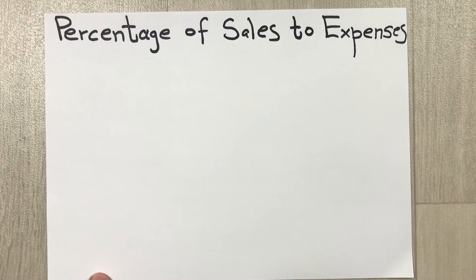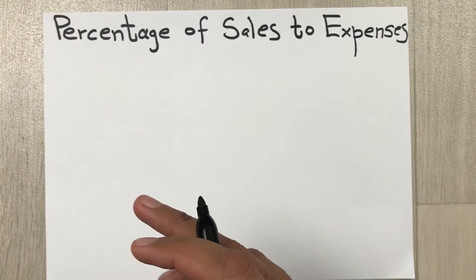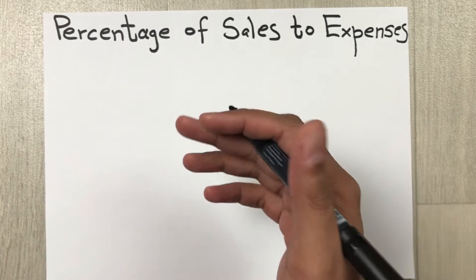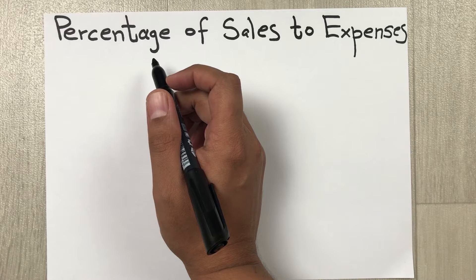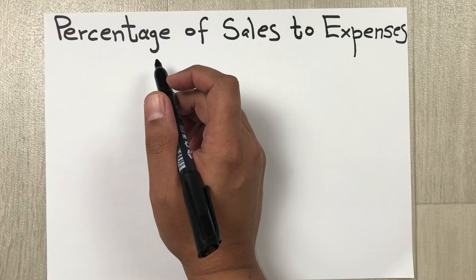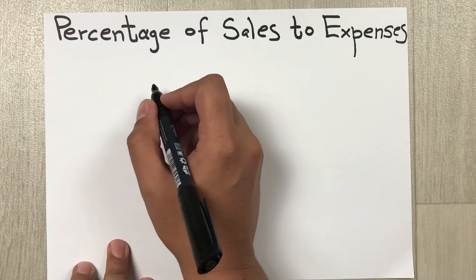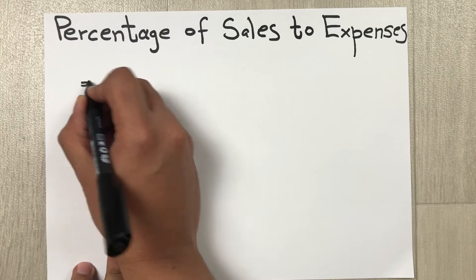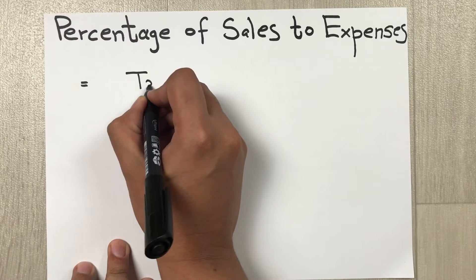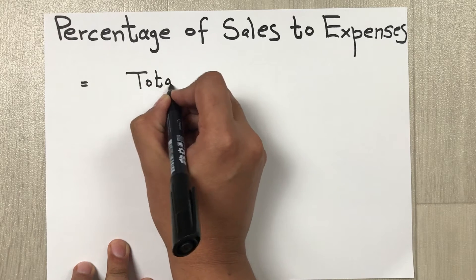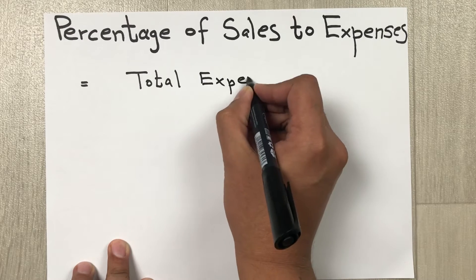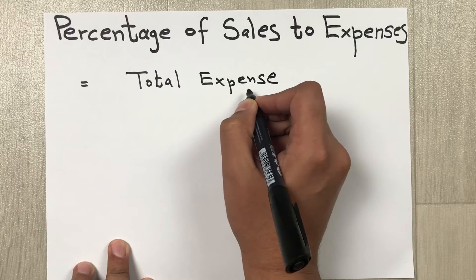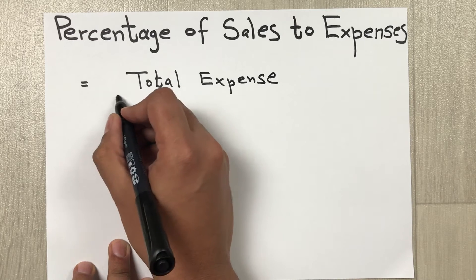Hello guys, I hope you are doing really well. In today's video I am going to show you how to calculate the percentage of sales to expenses. The formula to find out the percentage of sales to expenses is equal to total expenses divided by total revenue,